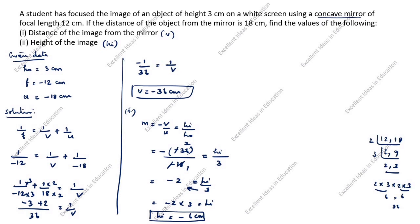The height of the image is minus 6 centimeter. Now we will draw the concave mirror. Drawing the mirror: u is minus 18, so we place the object on the negative side. This side is always negative, this side is positive. f is 12, so we mark f at 12. v is 36, so we mark v at 36 on the negative side.